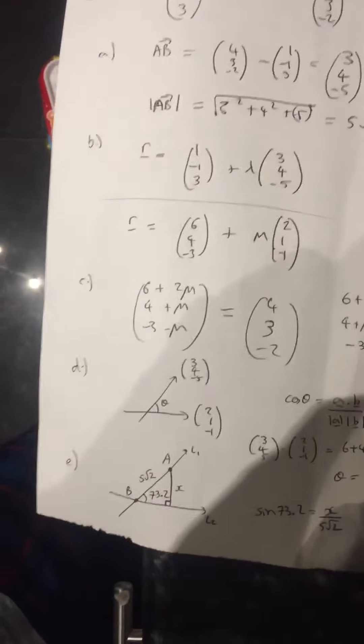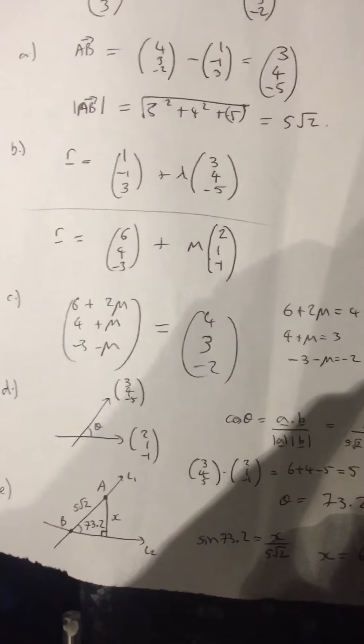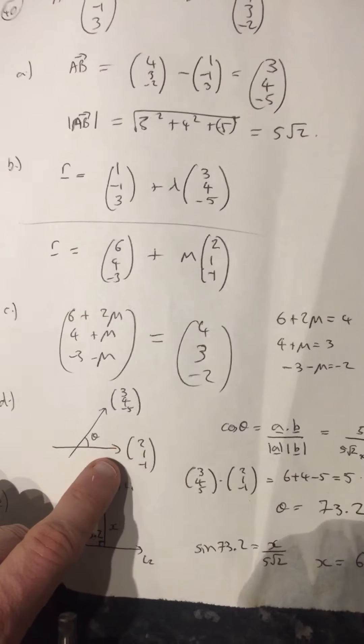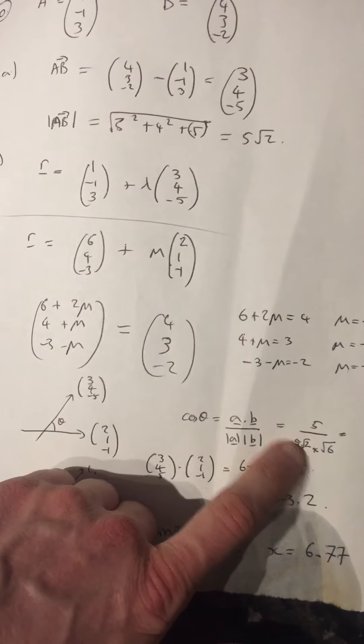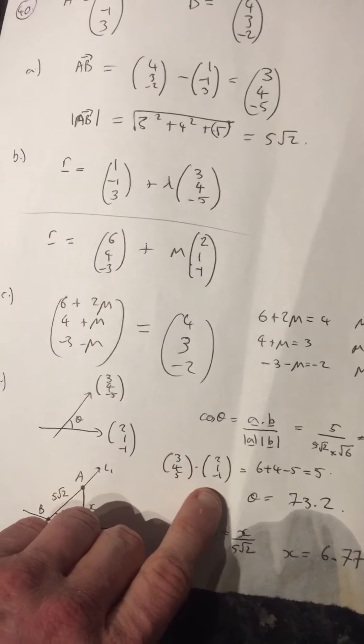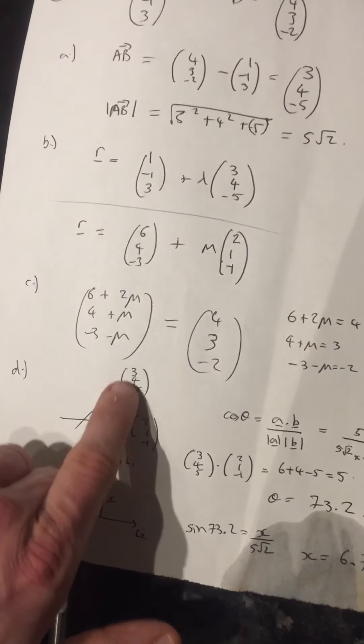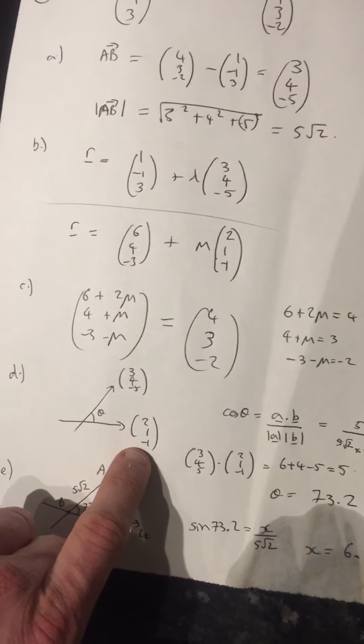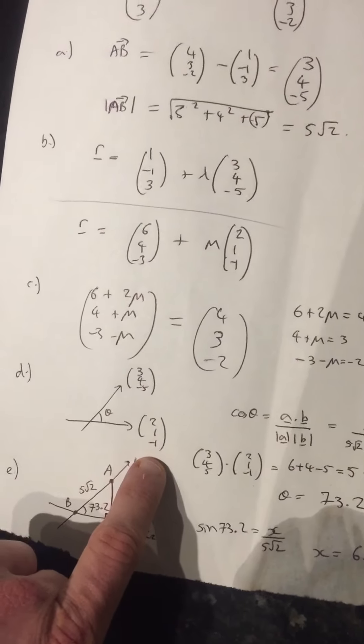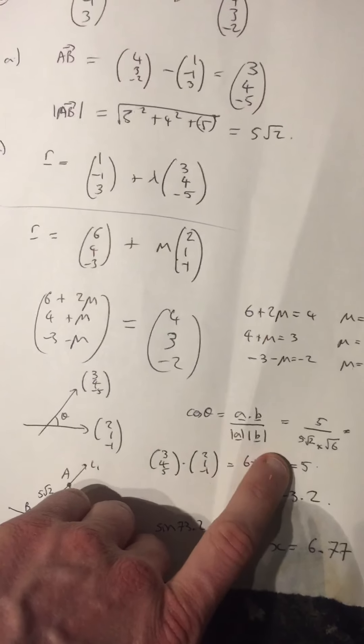So that's part C of the question. Part D, we have to work out the angle between these two lines. So I've just used the dot product rule, the dot product of this line and this line. The direction vector of this line, remember, is (3, 4, -5). The direction vector of this line was given to us. So we can do the dot product of those to get 5.